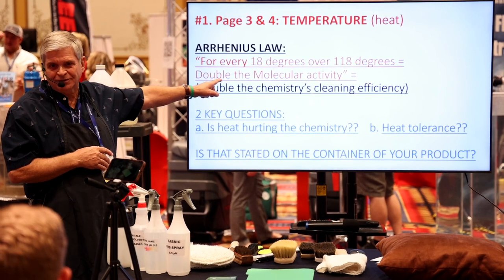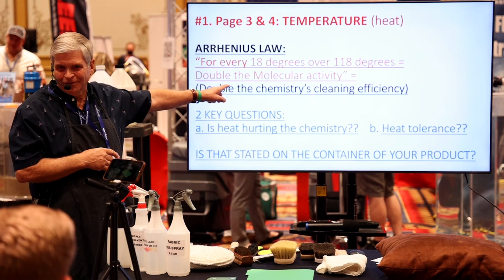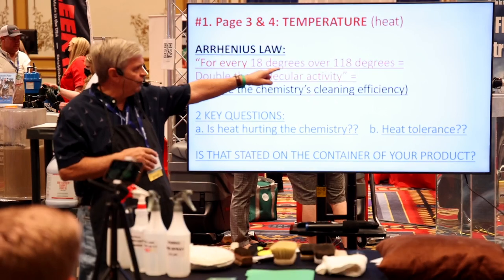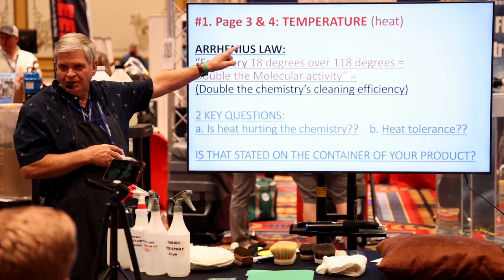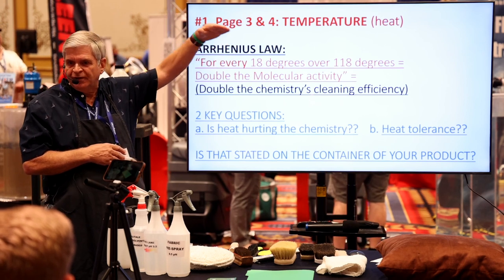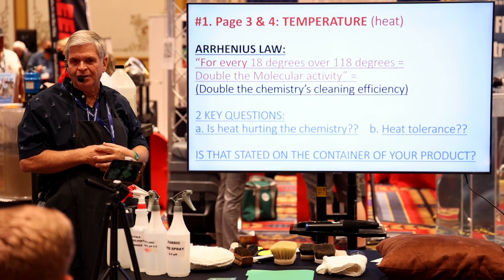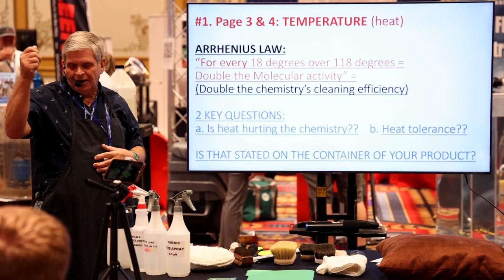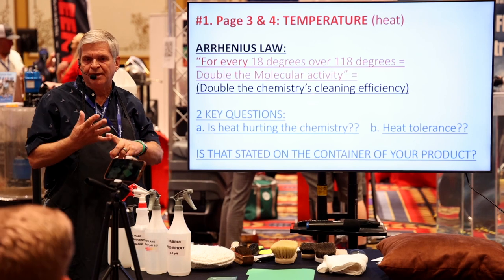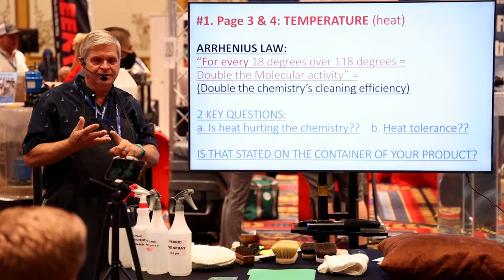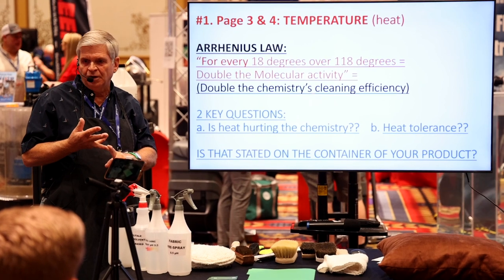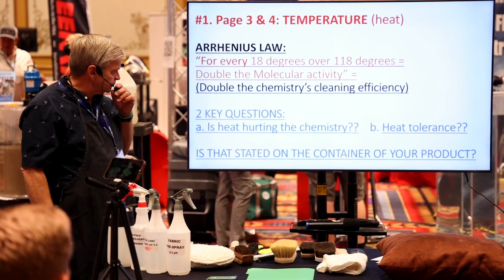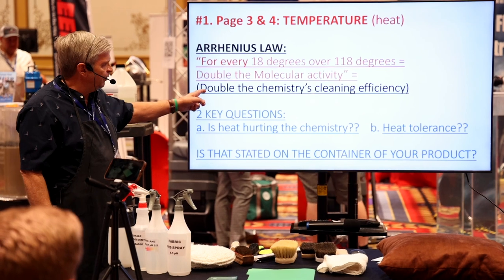By the way, it's the same guy who came up with that pH scale we've got to know. So at 118, 18 degrees over gives you 136, then 154, then 172, and it goes all the way up to 250 where it levels off — it doesn't get any different. Would we like to clean at 200 degrees? If we can, safely — oh, you bet. The fabric would dry faster, the soils would mount real well. When you have great temperature, does that take pressure off the chemistry? It takes pressure off the dwell time, and it takes a faster dry time overall. So we like heat. We're going to double the cleaning efficiency.